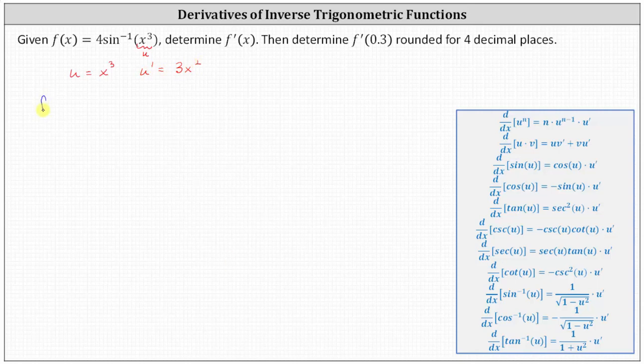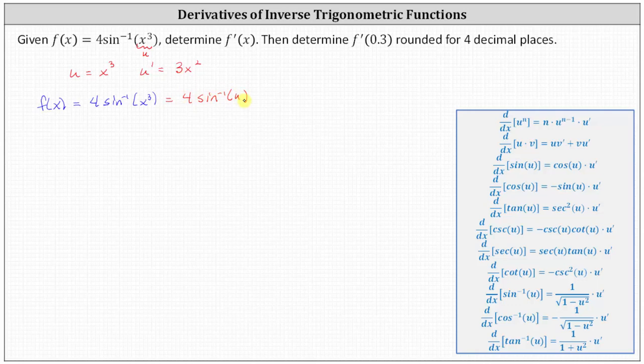So the given function f of x is equal to four inverse sine of x cubed, which now if it's helpful, we can think of as four inverse sine u and apply the derivative formula. f prime of x is equal to four times the derivative of inverse sine x cubed, or inverse sine u.